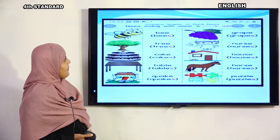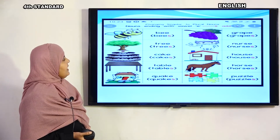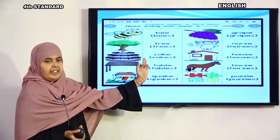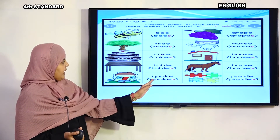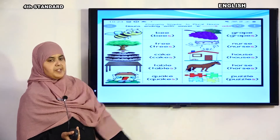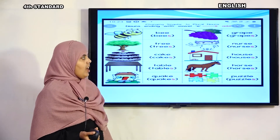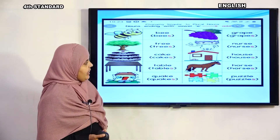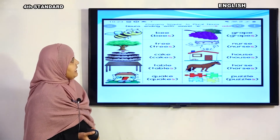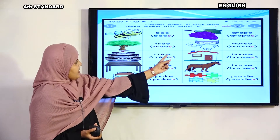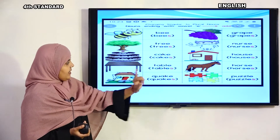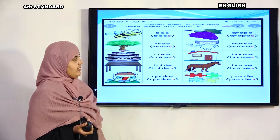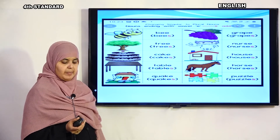Changing singular to plural — nouns ending with vowel 'E'. When a word ends in 'E', we also add 's'. Examples: bee — bees, tree — trees, cake — cakes, table — tables, grape — grapes, nurse — nurses, house — houses, horse — horses, puzzle — puzzles. When a word ends in 'E', add 's' to make it plural.